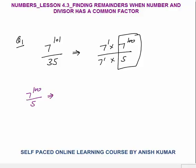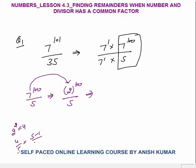Now the basic rule is: we know that you have to replace the number with its remainder. 5 by 7 gives remainder 2, so 7 power 100 divided by 5 becomes 2 power 100 divided by 5. Now which power of 2 gives plus 1 or minus 1 remainder? We know that 2 squared is 4, and 4 divided by 5 gives remainder minus 1, because 4 can be written as 5 minus 1.